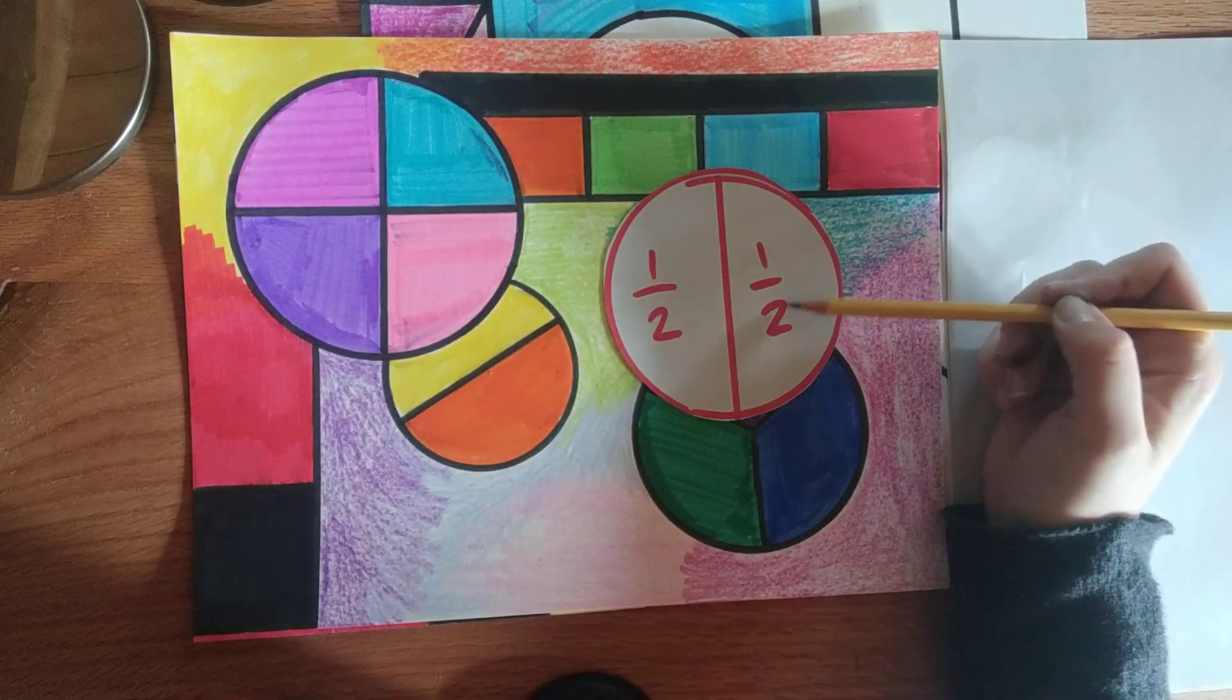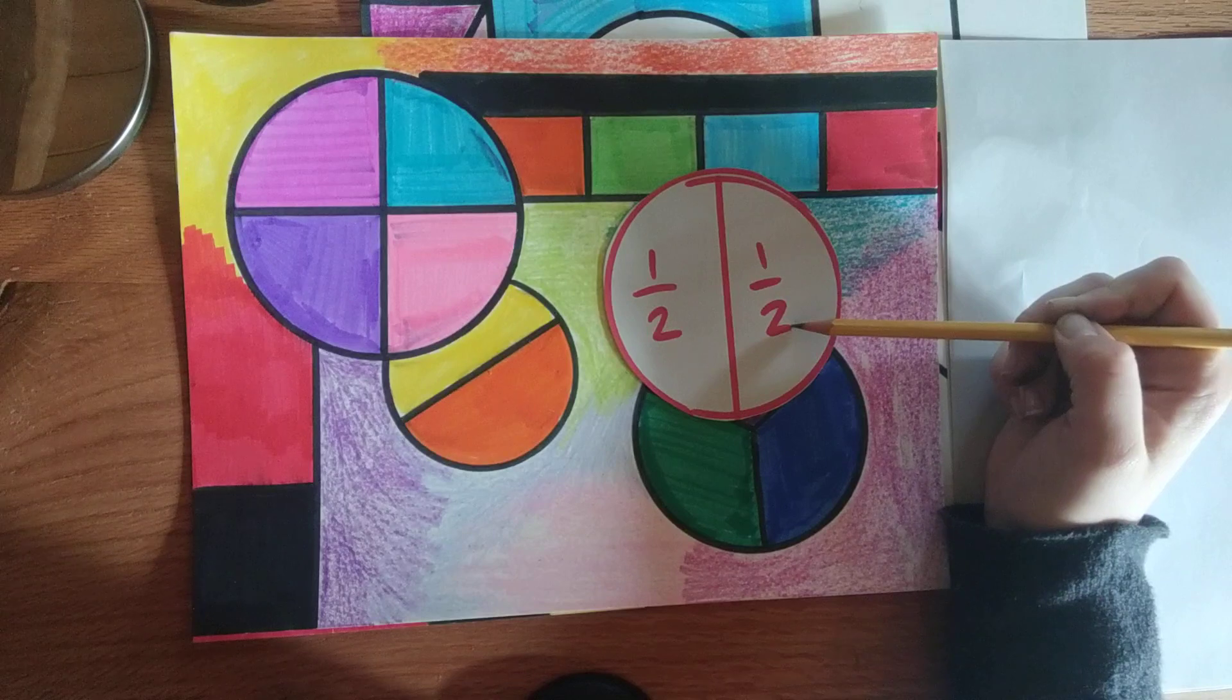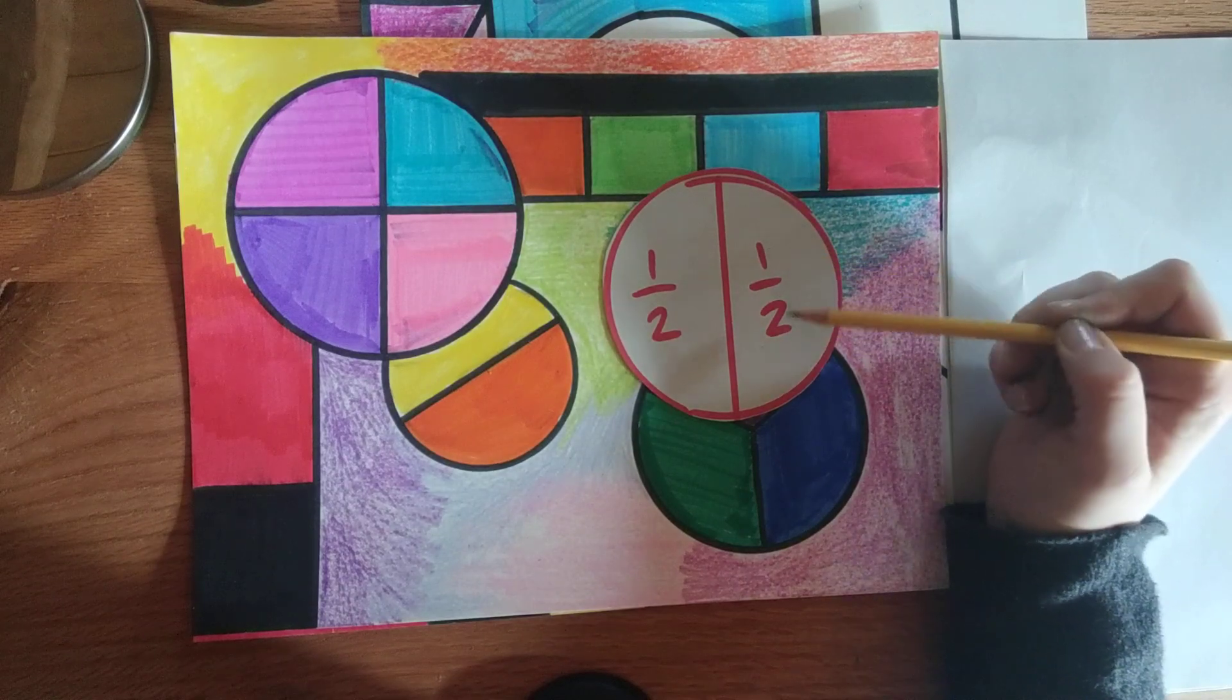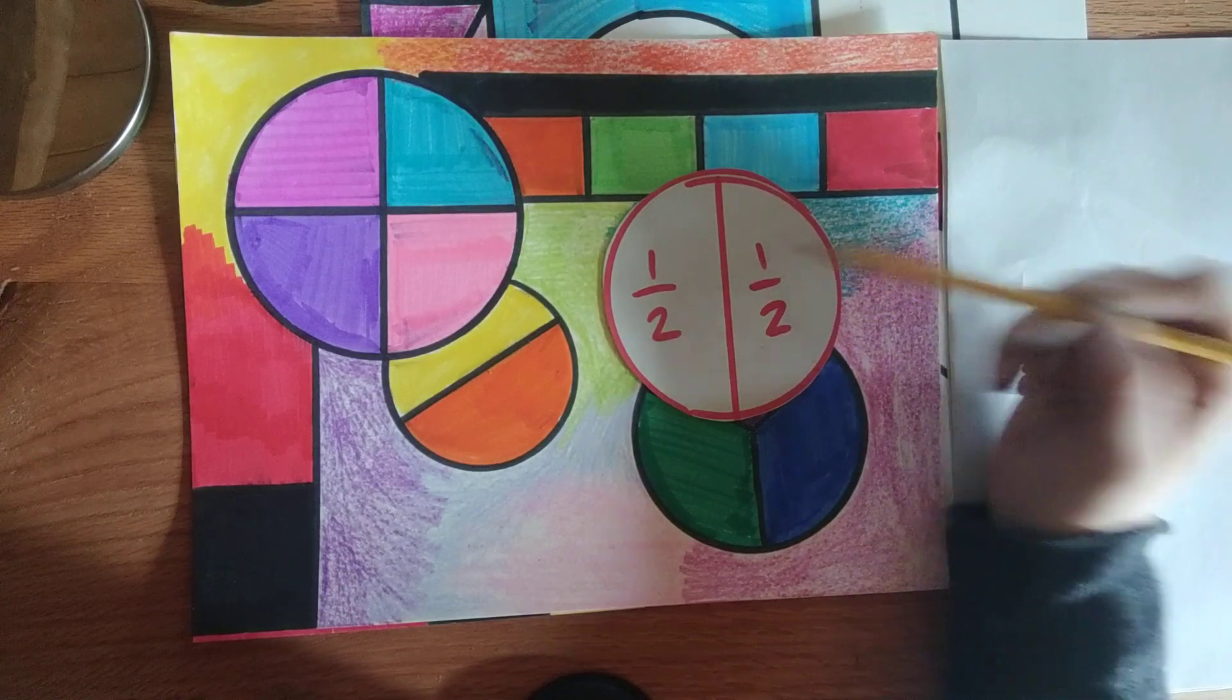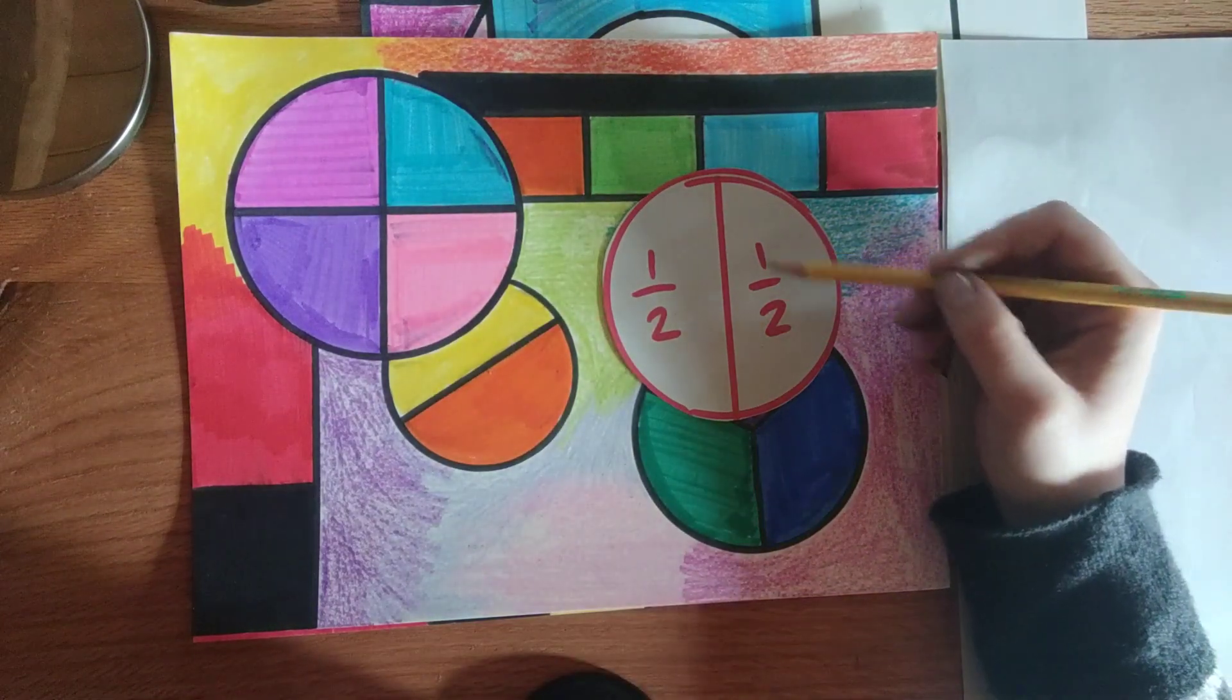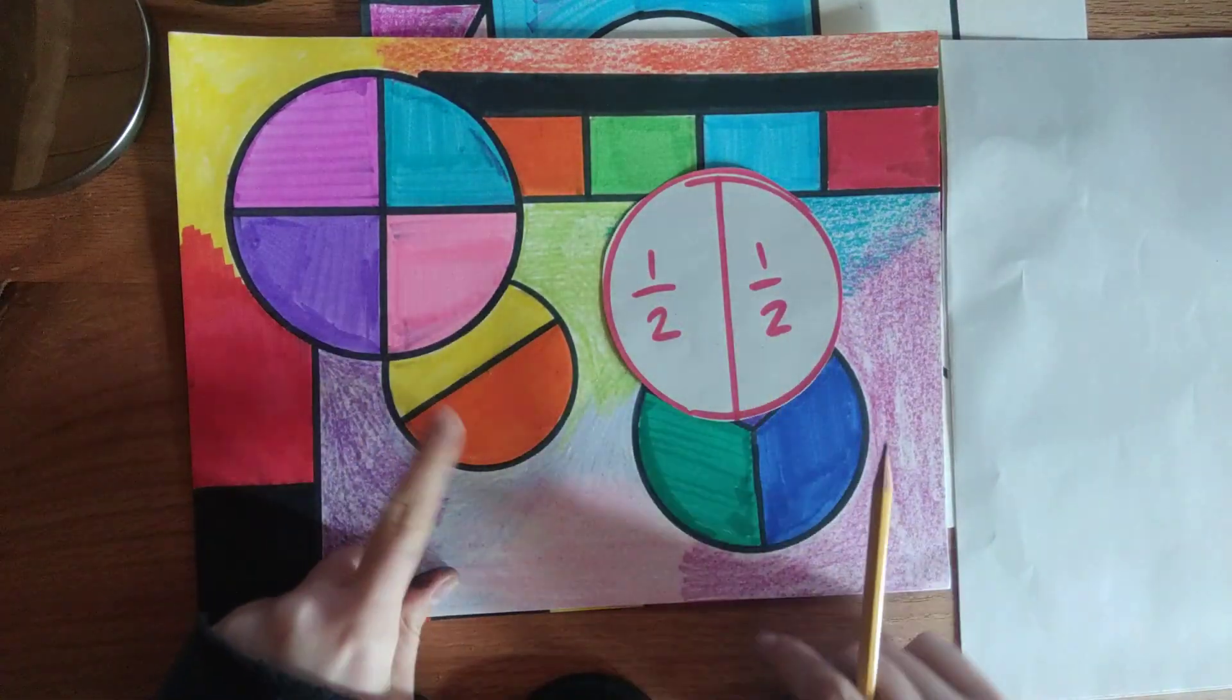One over two because there's two whole parts, right? One, two parts. The denominator and then the numerator is at the top. One half. That's my half circle.